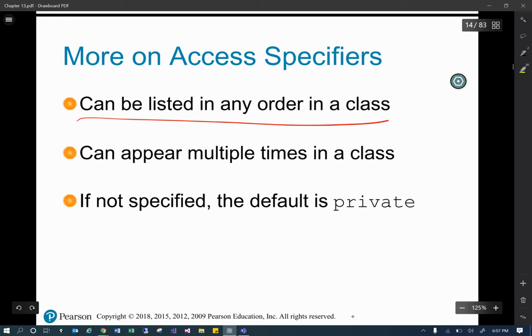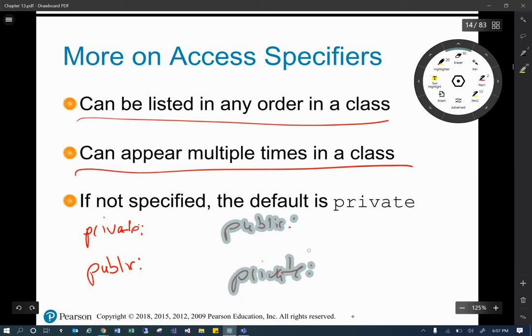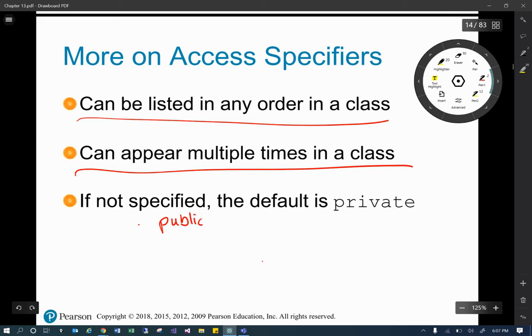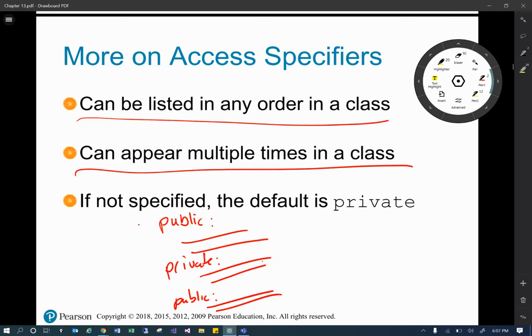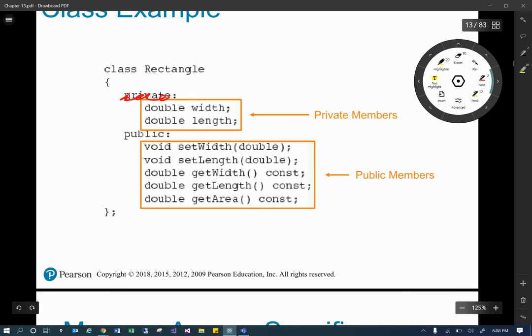And this is an example. We've already kind of laid this out where these are the private variables and these are the public methods. And they can be listed anywhere. What we just saw was we had private at top and then public. It doesn't have to be that way. You can have public up top first and then private. It can appear multiple times. So we could simply say we have public here and we get a couple of items, then we have private, a couple of items, and then we can also do public again and do a couple of items. If you don't specify something, it's private.